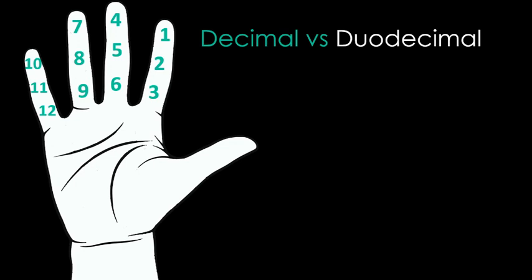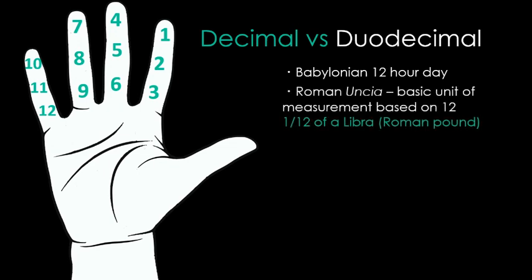Actually, in ancient times, lots of societies used the base twelve system, instead of base ten. For example, the Babylonians had a twelve-hour day. The Romans used a system of measurement called uncia, which is based on twelve. An uncia is one twelfth of a Roman pound.